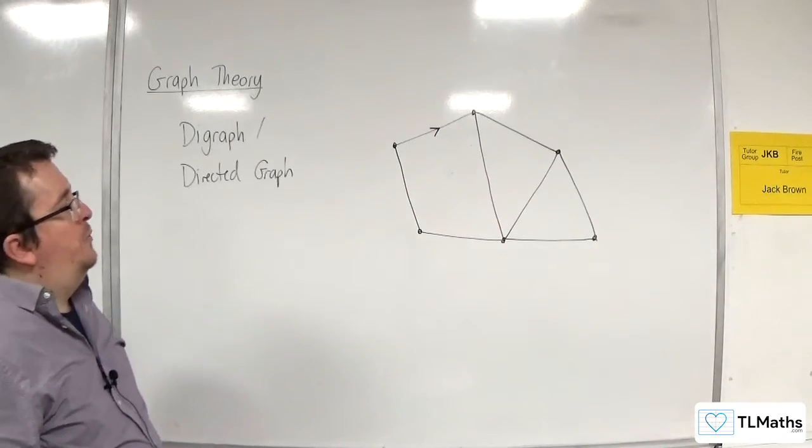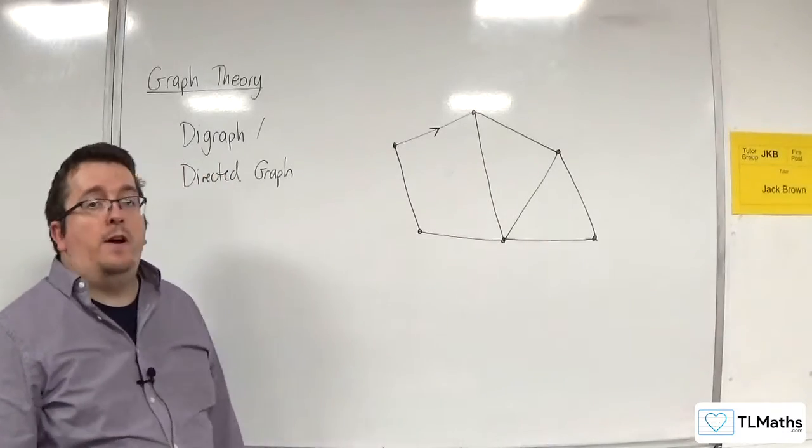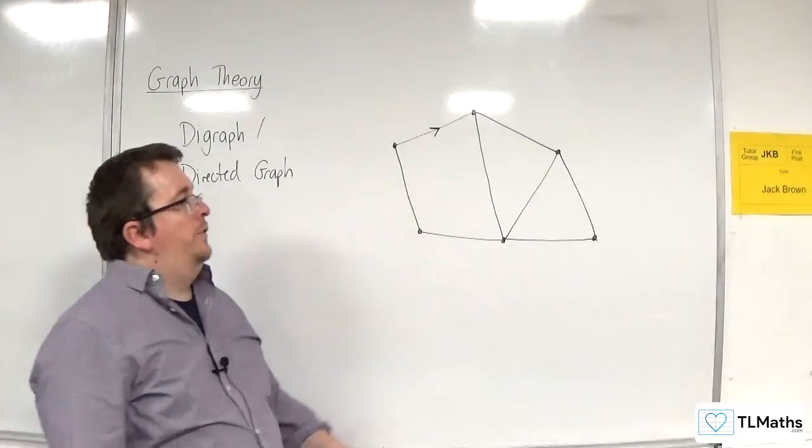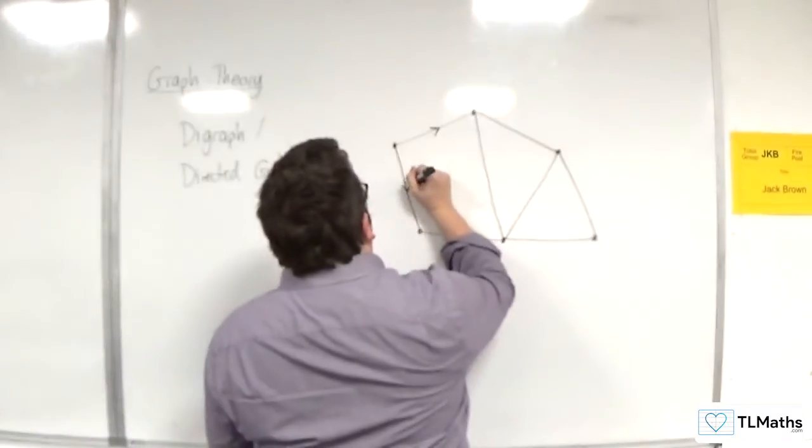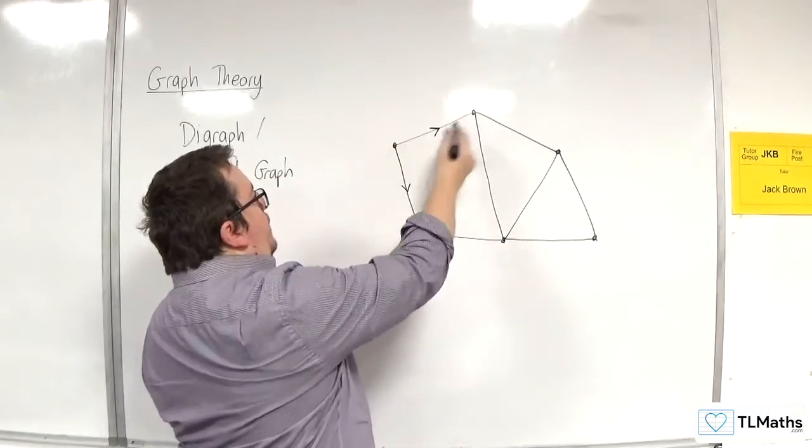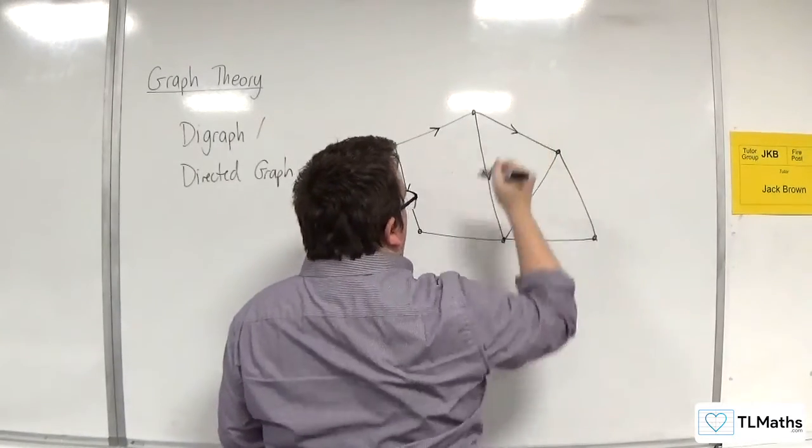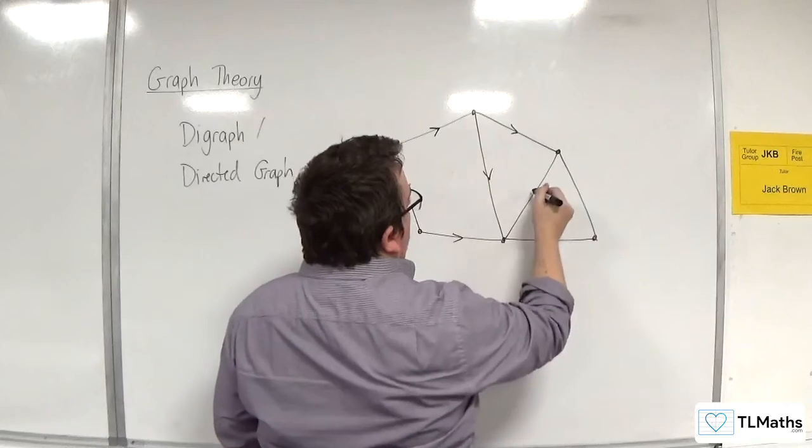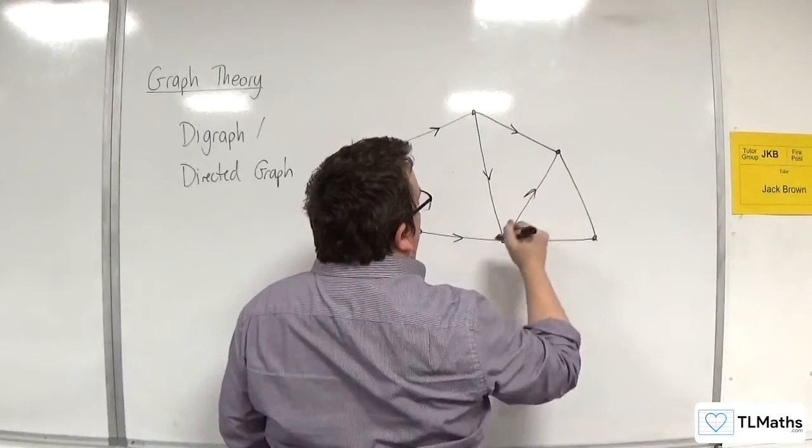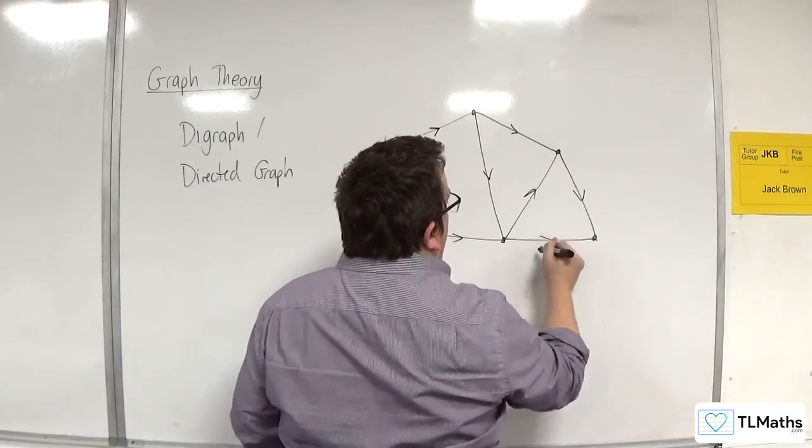Or it could represent a fire exit route, for example. So we could have a fire exit route where you can either go this way or this way. You've got to go along that way, that way, and that way. And you can go that way, that way, and that way.